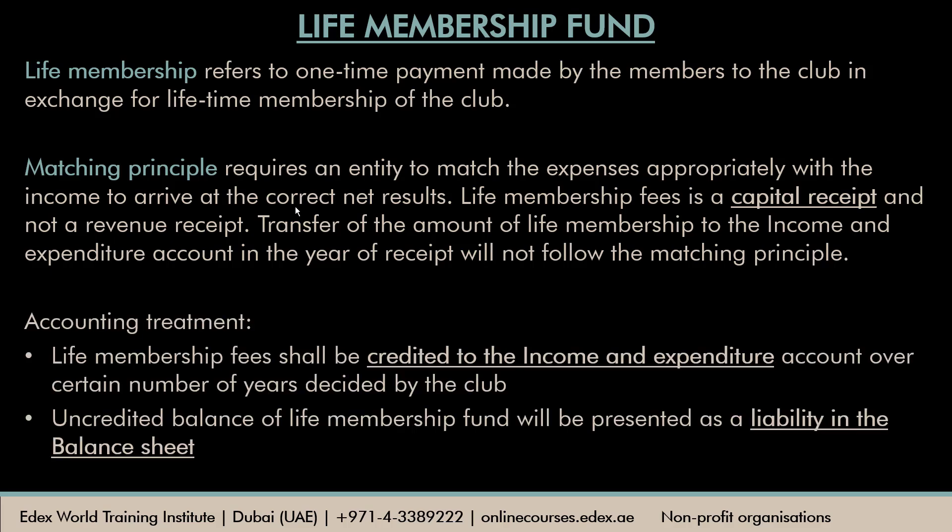So life membership fees will be credited to the income and expenditure account not in the year of receipt, but over a number of years as decided by the club — it could be 10, 15, or 20 years depending on the club's estimates. Any uncredited amount — that is, the amount not yet transferred to the income and expenditure account — remaining in the life membership fund will be shown under the liability section in the balance sheet.